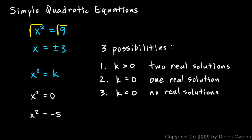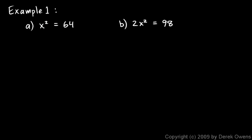So you either have two solutions, one solution, or none — and those are your three possibilities. Now we'll work through some examples.